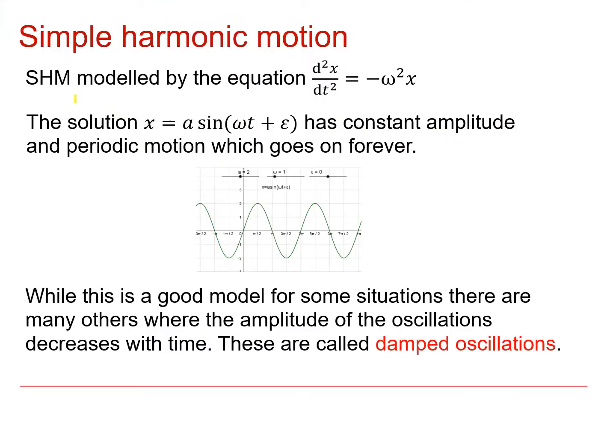In a previous video we looked at modelling simple harmonic motion and we ended up with this differential equation, which has the acceleration proportional to the displacement from the centre and directed back towards it. Its general solution has a constant amplitude and therefore gives us a periodic motion which goes on forever as you can see on this graph.